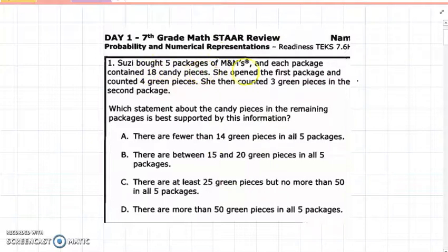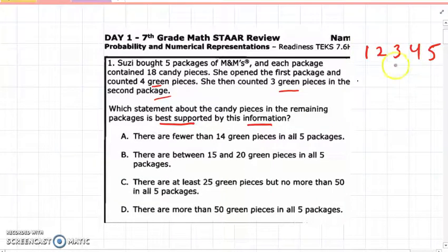Suzi bought five packages of M&Ms, and each package contained 18 candy pieces. She opened the first package and counted four green pieces, and she then counted three green pieces in the second package. And so what is a good statement about the candy pieces in the remaining packages? Which one is the best prediction to make? We have to look at each individually, but remember there's five packets.